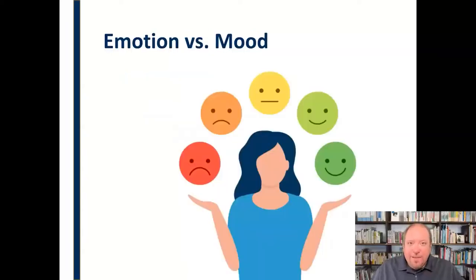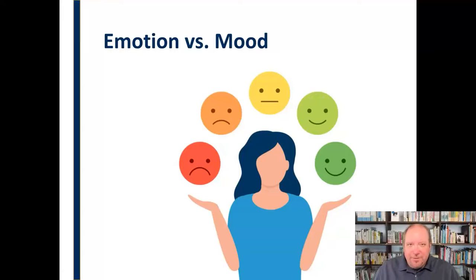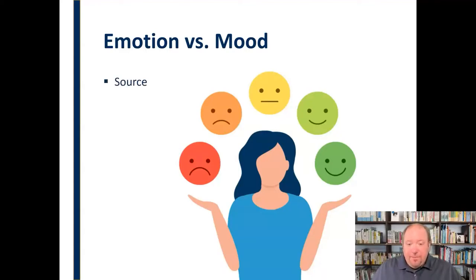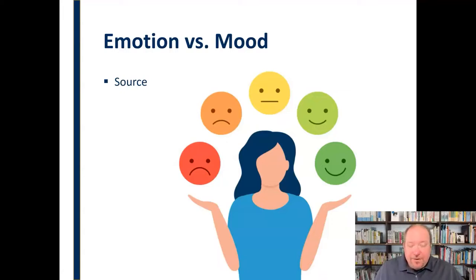But first, let's look at emotion versus mood. Sometimes these terms get thrown around interchangeably like they're the same thing, but they're not. There are two primary differences between emotion and mood. The first is the source. Emotion, as we just talked about in that definition, has a source — it's a response to an event, to something specific. There's something specific and identifiable that triggers an emotion.